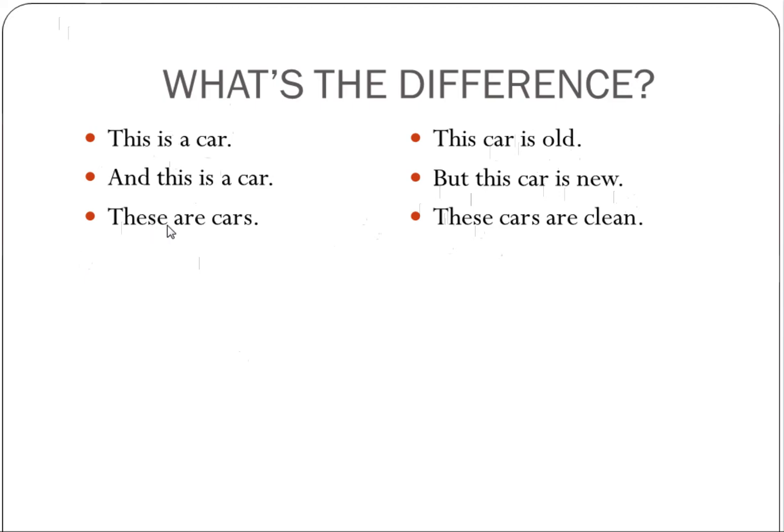If you can imagine the child asking and pointing saying what is this, the answer to this question will be similar to the sentences on the left. This is a car. This is a house. And this is a table. So we are naming. And notice how the sentences have this plus the verb. This is together. And when we make our noun plural the words change to plural forms but they are still together. This is. These are. You can have those are. That is. But those words are together.